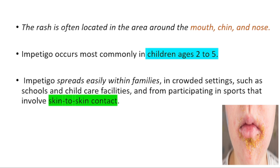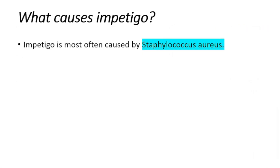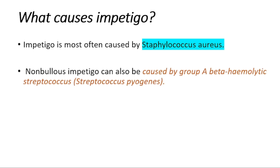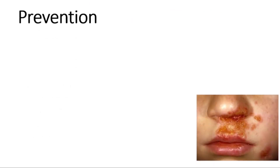The cause of impetigo is generally Staphylococcus aureus. The bacteria that cause impetigo often enter the skin through a small cut, insect bites, or a rash.